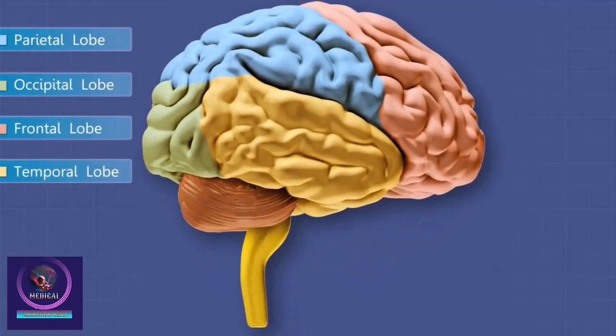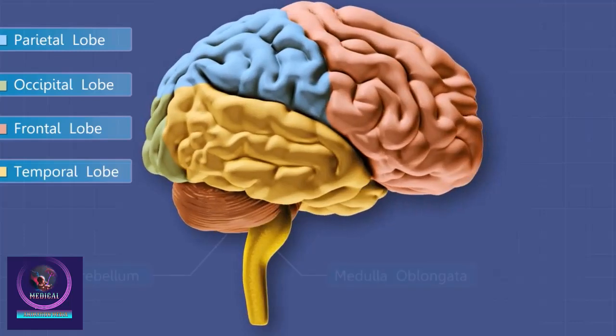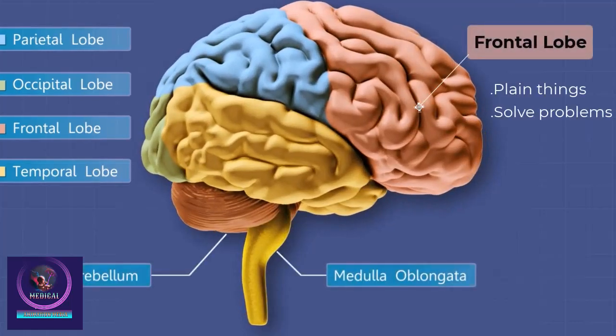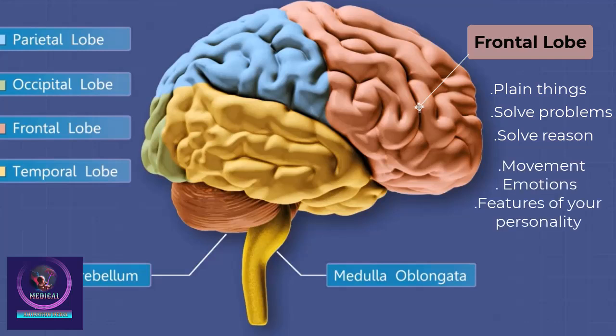The large frontal lobe shown here is responsible for your ability to plan things, to solve problems, and to reason. It is also concerned with movement, emotions, and features of your personality.